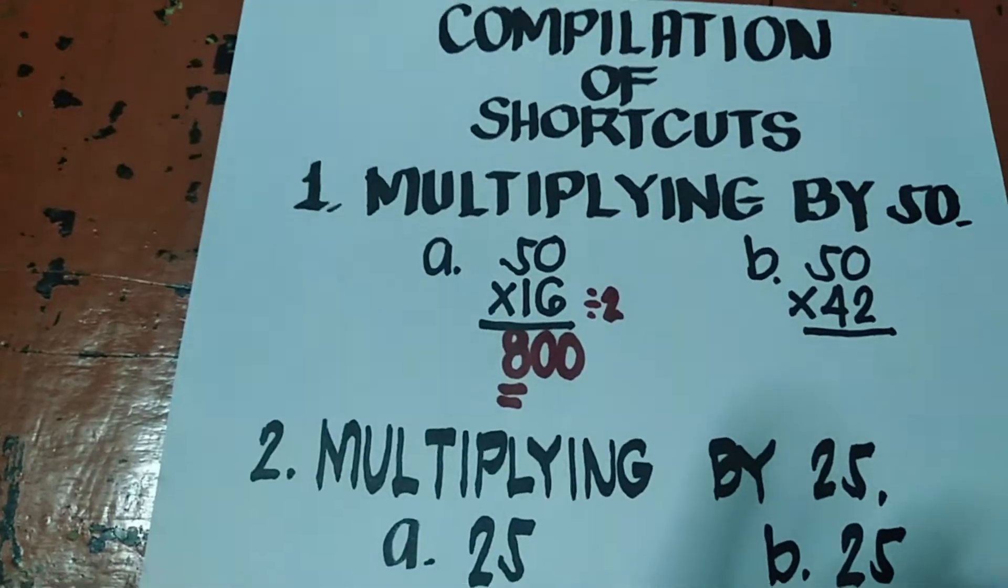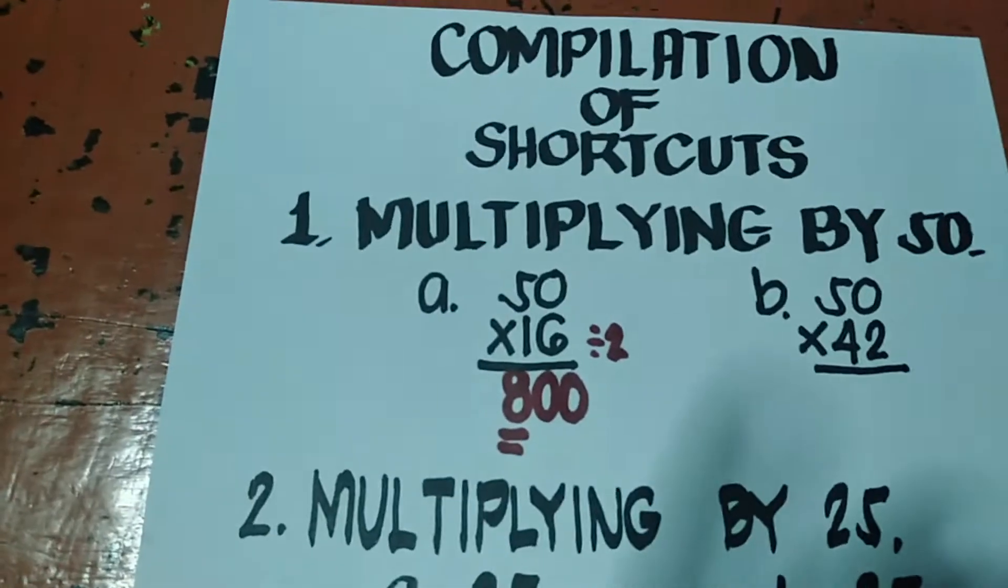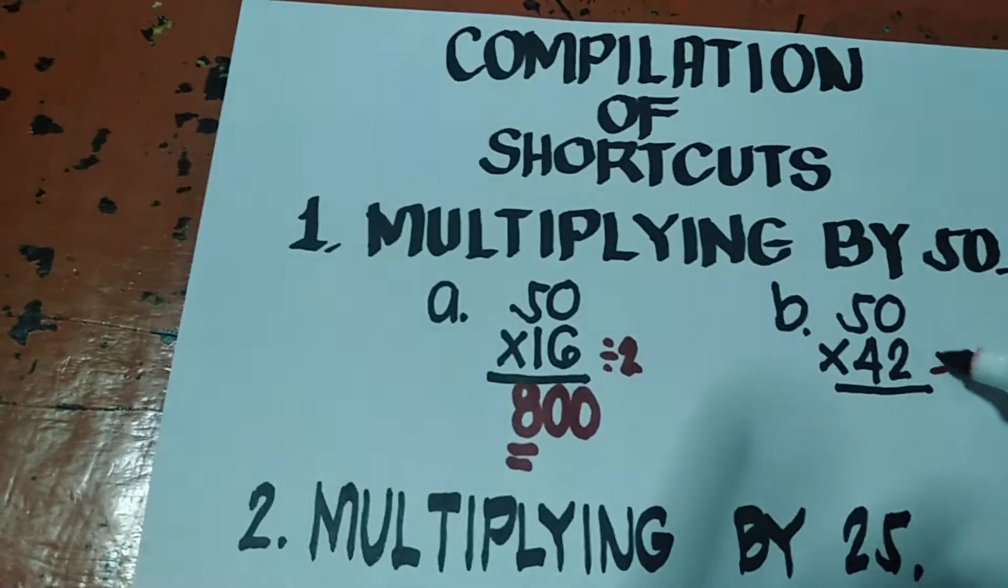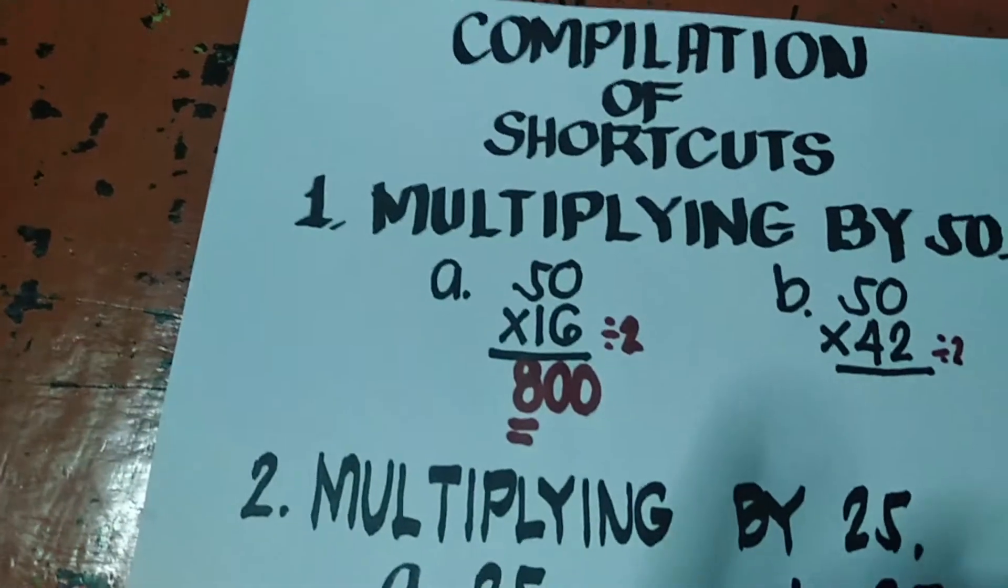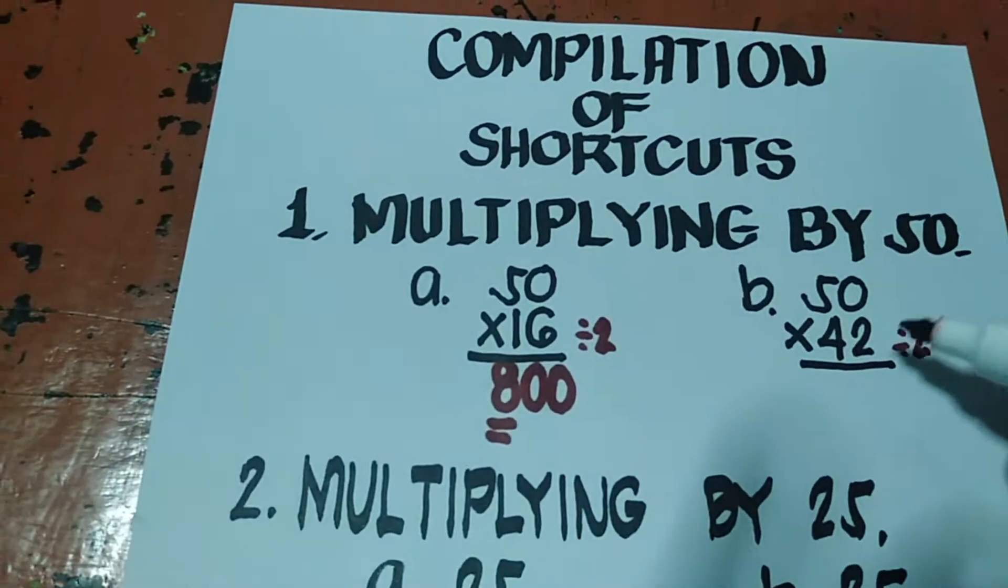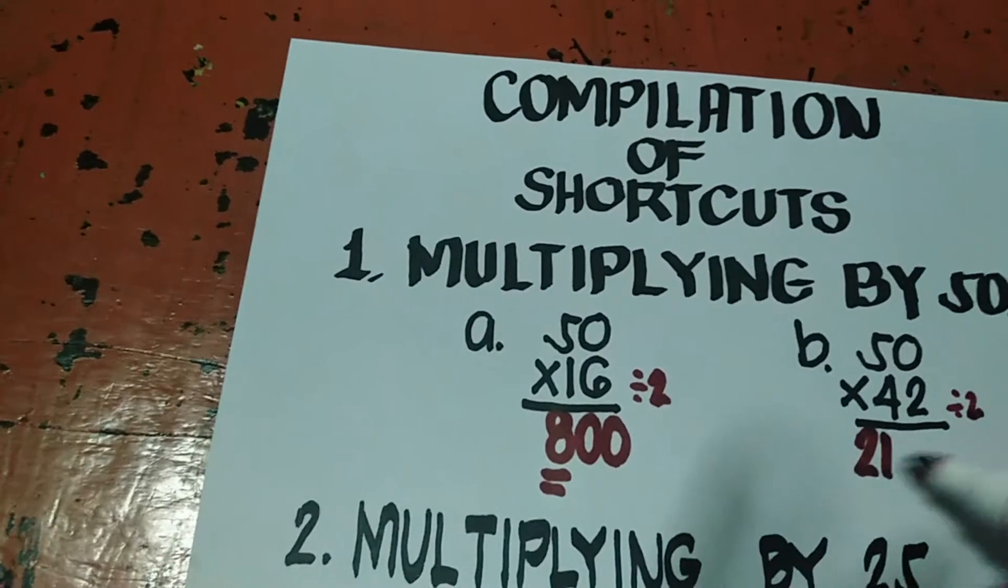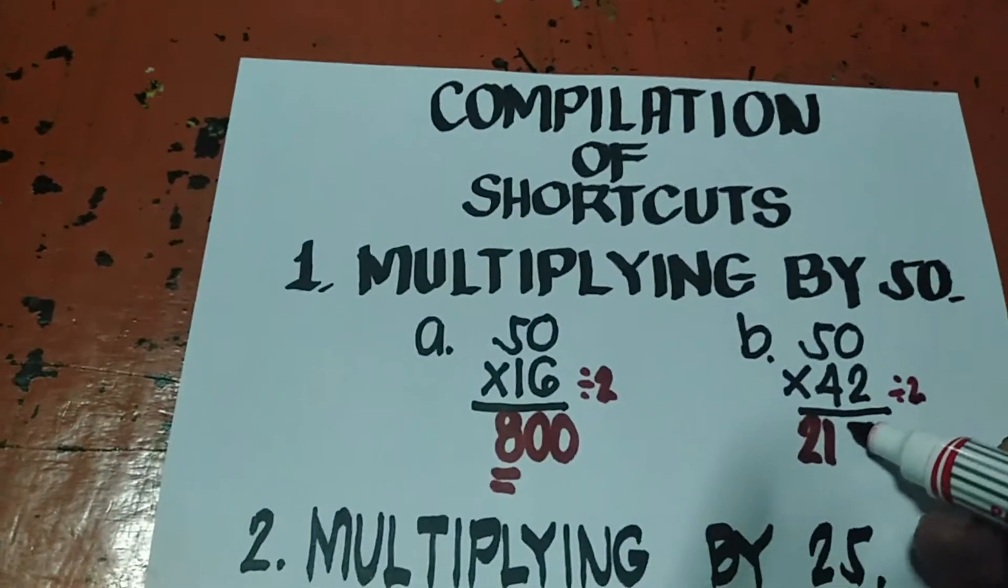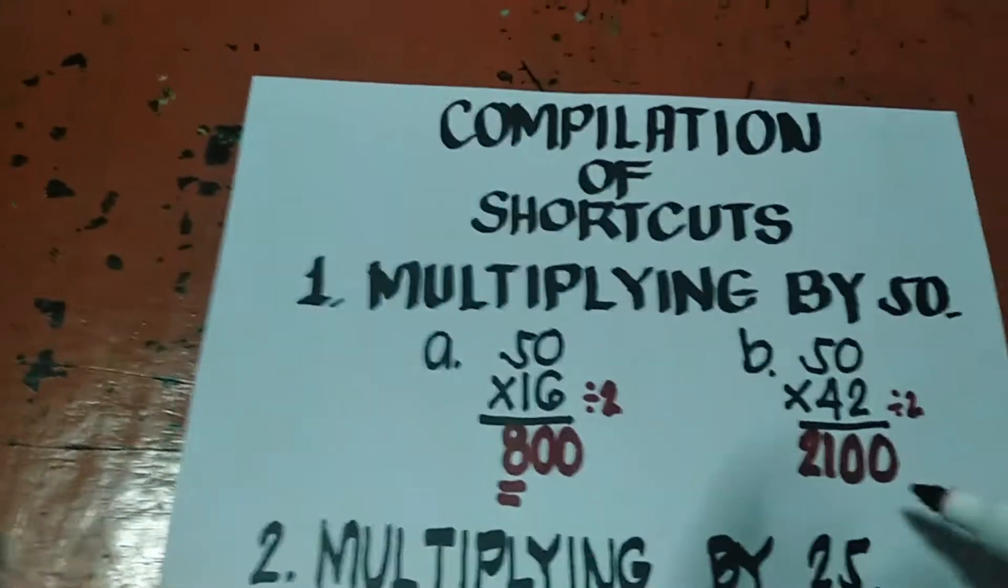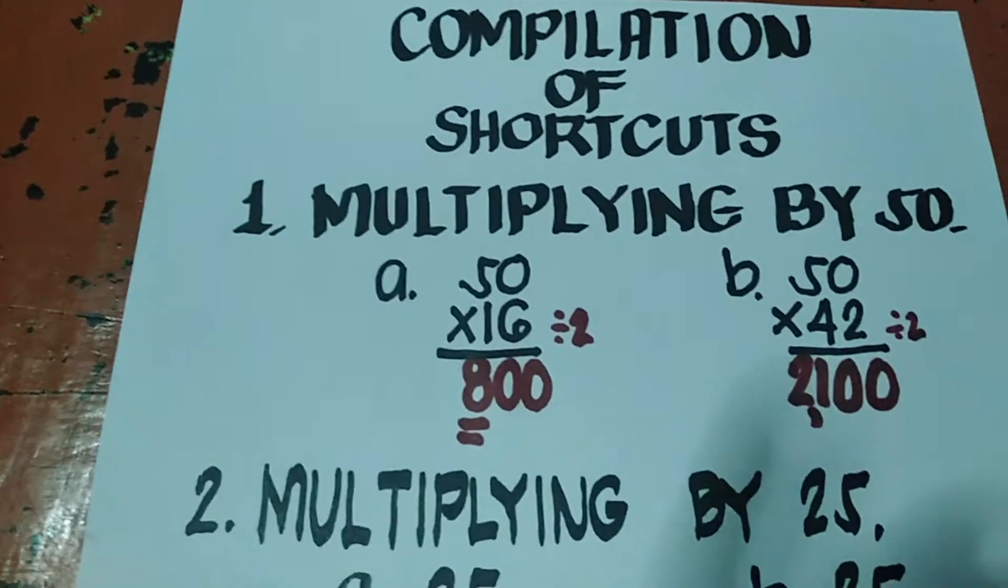Hindi mo na kailangan yung long method. Sa B, 50 times 42. Gagawin natin, kukunin lang natin yung kalahati niya. Pag magaling ka ng kumuha ng 1 half niya, madali lang. Ano ang kalahati ng 42? 21. Tadagdagan mo lang siya ng 2,0. So ang answer natin ay 2,100.